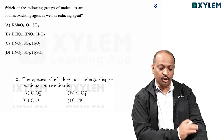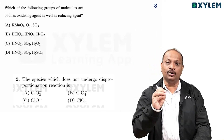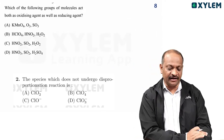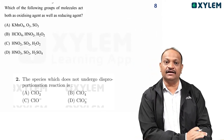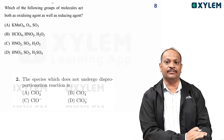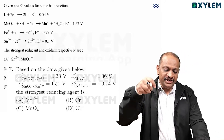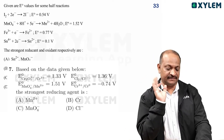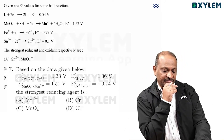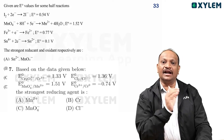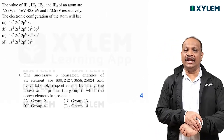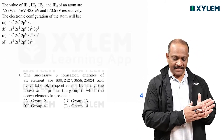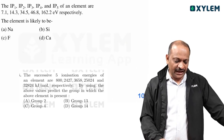Which of the following group of molecules act both as an oxidizing agent as well as a reducing agent? Given our E0 values for some half cell reactions, the value of I1 and I2 is in the next phase.